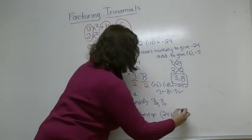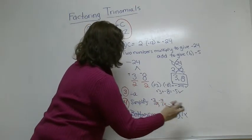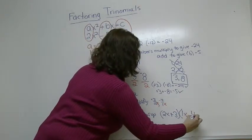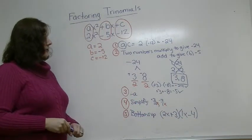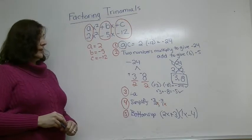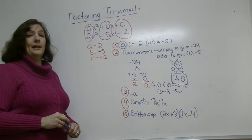Our next one is going to be 1x, and the sign is a minus, so minus 4. So our final factored form is 2x plus 3 times 1x minus 4.